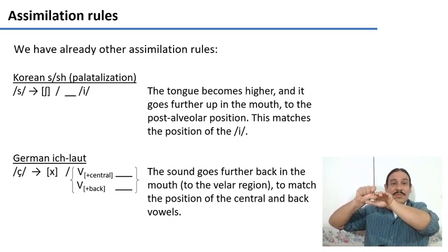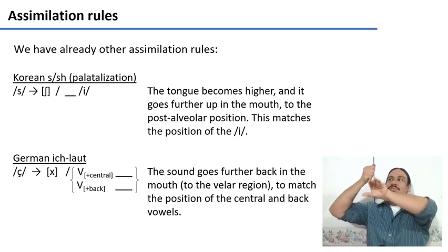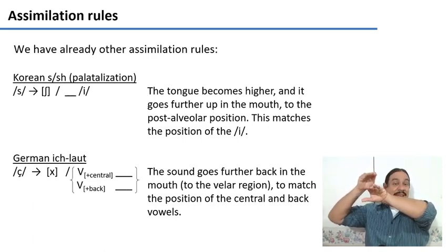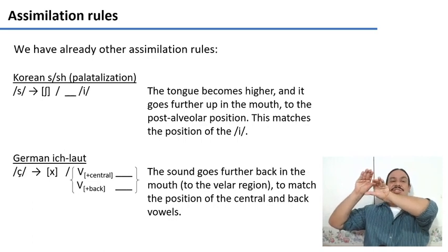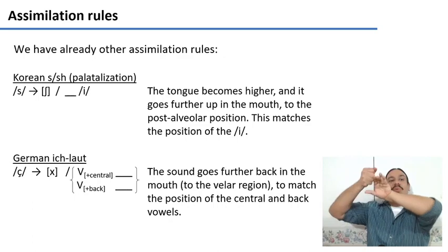So it moves your tongue from your alveolar region into your post-alveolar region as it tries to draw it closer to where your tongue is for the i. We call this process palatalization. And as you can see it's a form of assimilation because the i is pulling your tongue up.